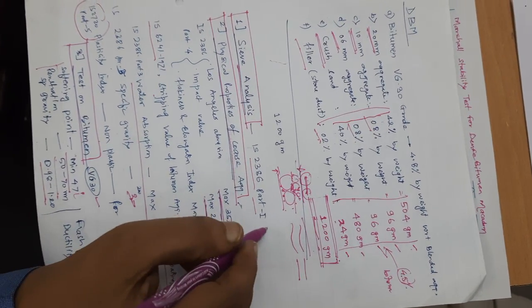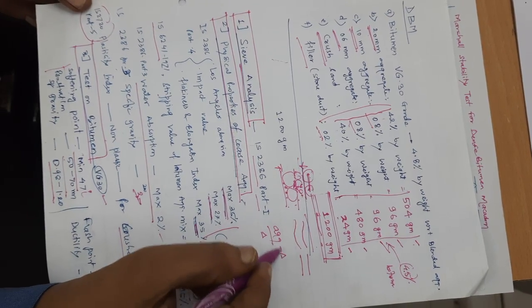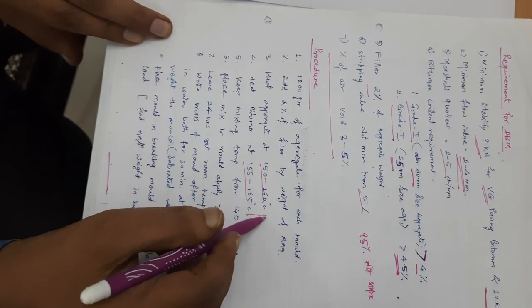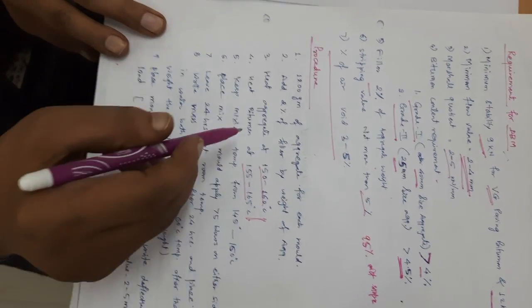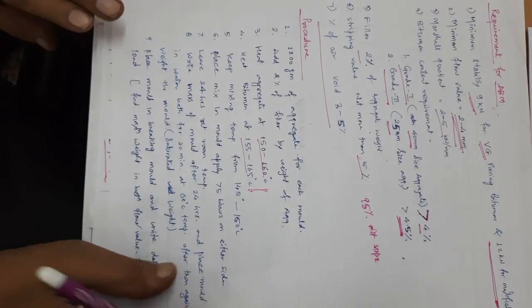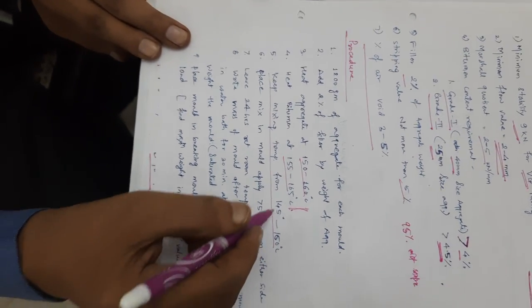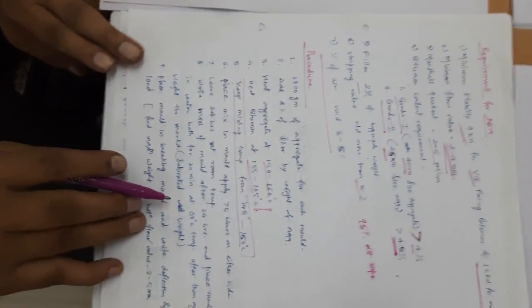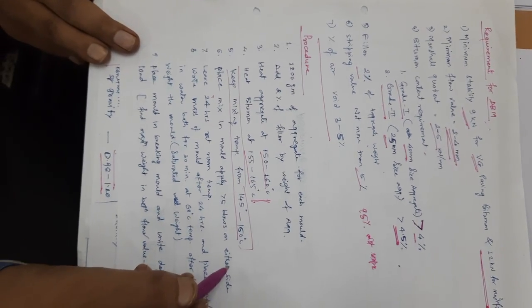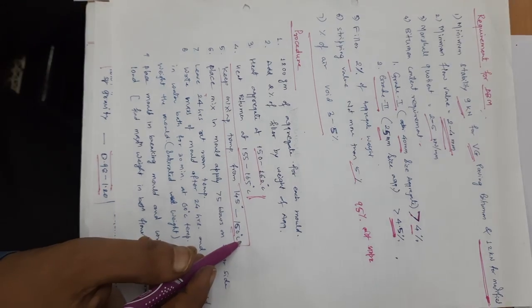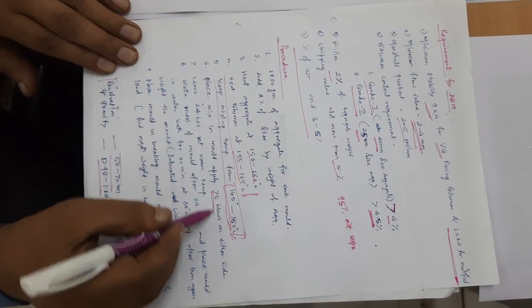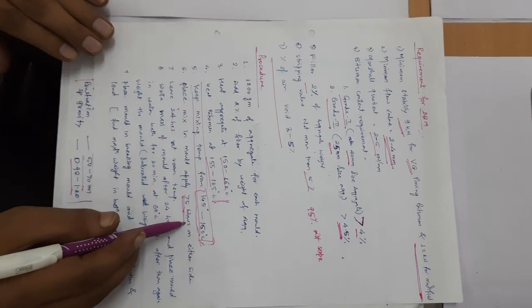Before that, we have to heat the aggregate. The aggregate will be heated to around 150 to 160 degrees centigrade. We are also going to heat the bitumen — bitumen is heated at 155 to 165 degrees centigrade. There is a slight temperature variation between the aggregate and the bitumen. The mixing temperature should be between 145 to 160 degrees centigrade. We have to mix it with heating so it is prepared properly. After placing in the mould, we have to apply 25 blows, and while applying 25 blows, we are doing compaction — we should also record the temperature of the sample at that time.